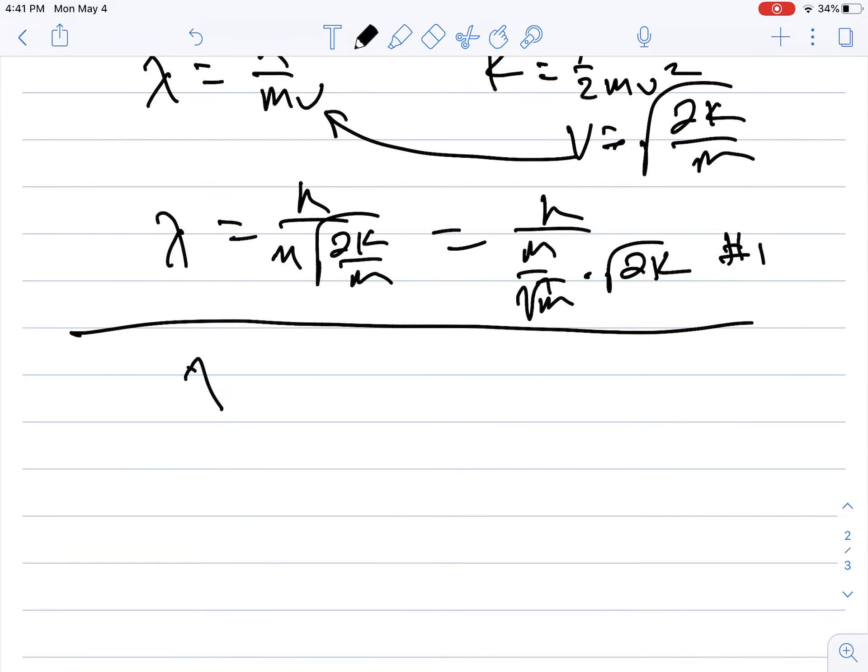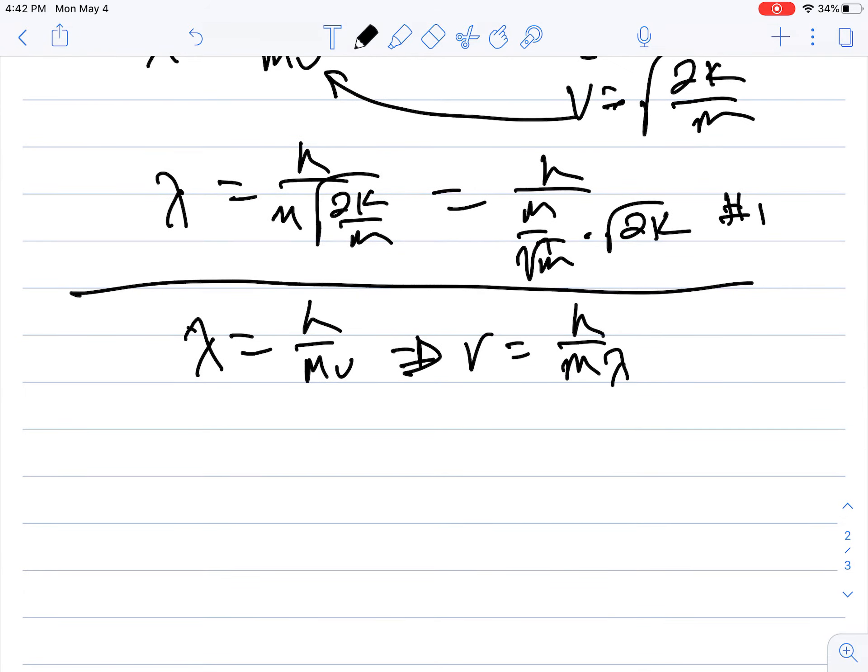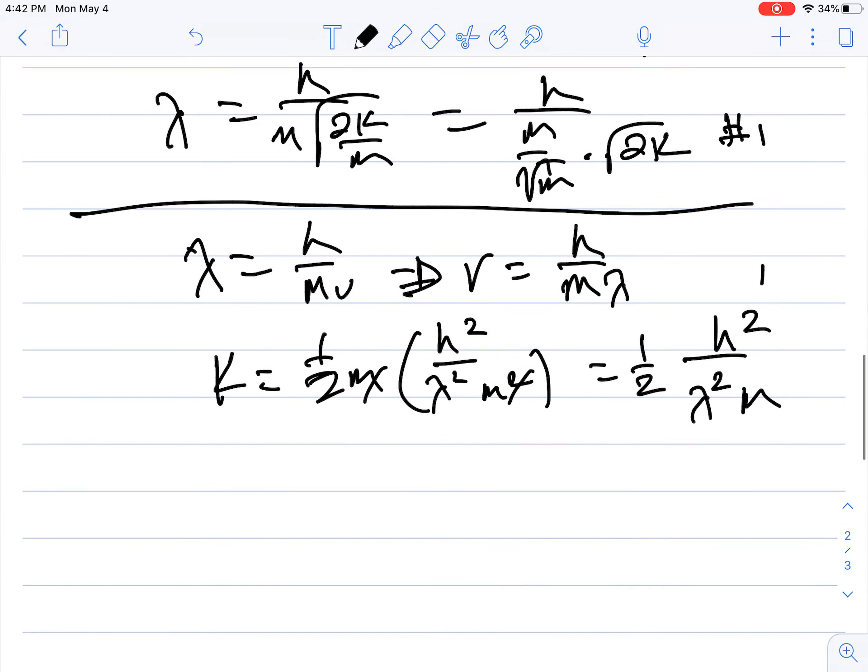So then on the second one, we're gonna start with the same idea that lambda equals h over momentum. Then if we take and solve this for velocity, we get h over m lambda, which is kind of cool, and then if kinetic energy equals one-half m times velocity squared, we get h squared over lambda squared m squared, and we can cancel out one of the m's, and we get one-half h squared over lambda squared m. So there's the second one.